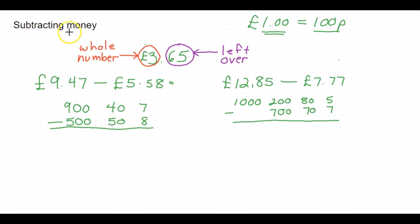Okay, in this video I'm going to talk about subtracting money. As you should remember, one pound is the same thing as 100 pence. So if I've got 500 pence, it means I've got five pounds. And if I've got nine pounds, it means I've got 900 pence. Keep that connection in mind.